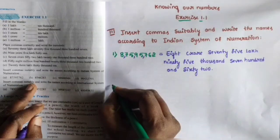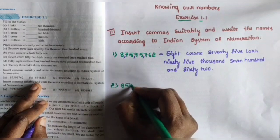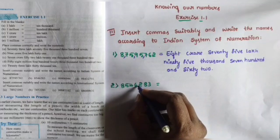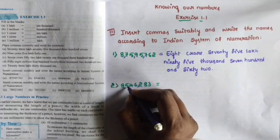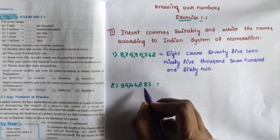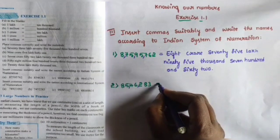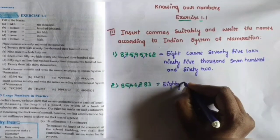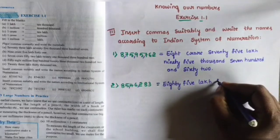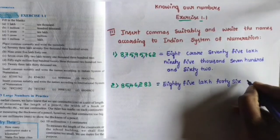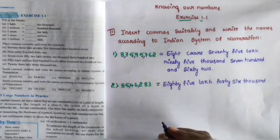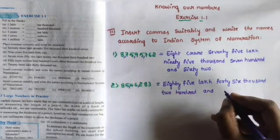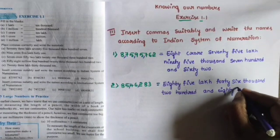Question number two: 8,54,62,83. Insert commas according to the Indian system of numeration — units, tens, hundreds, thousands, ten thousands, lakhs, ten lakhs. Written in words: eighty-five lakh, forty-six thousand, two hundred and eighty-three.